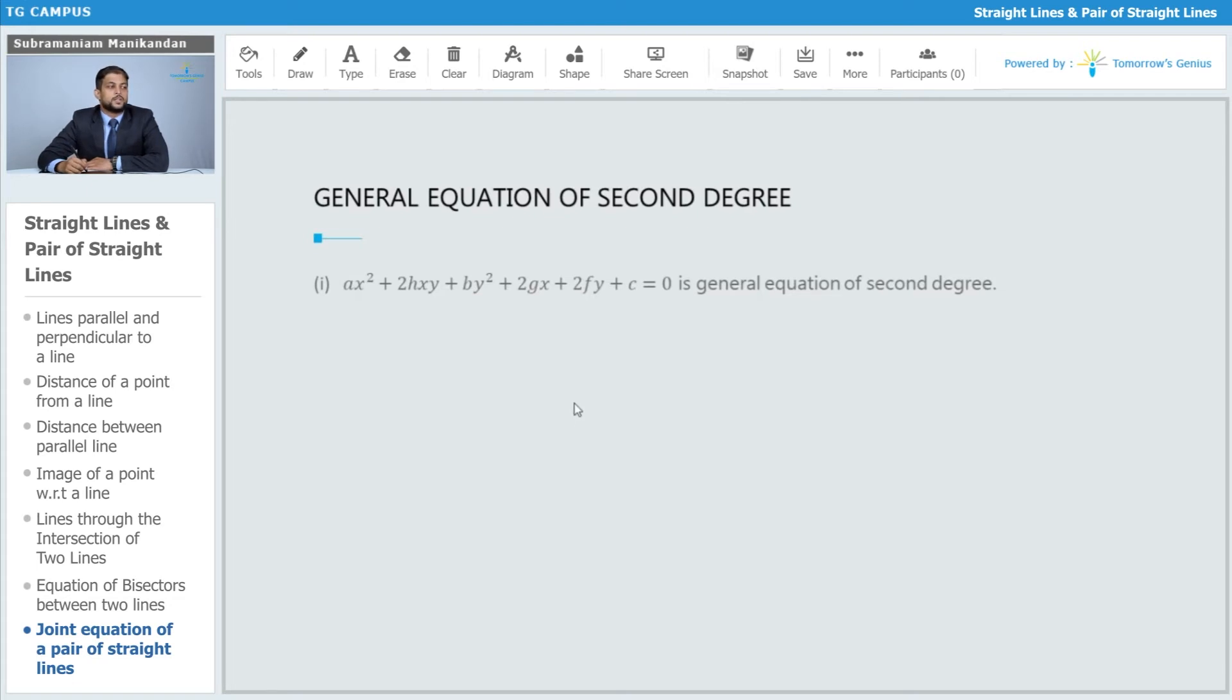ax² + 2hxy + by² + 2gx + 2fy + c = 0. This is the general equation of second degree.